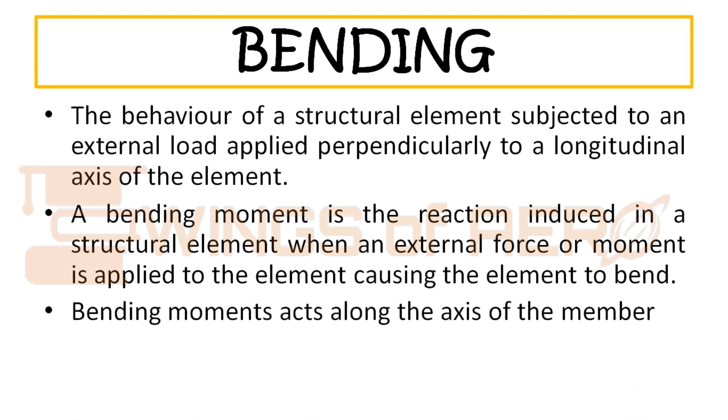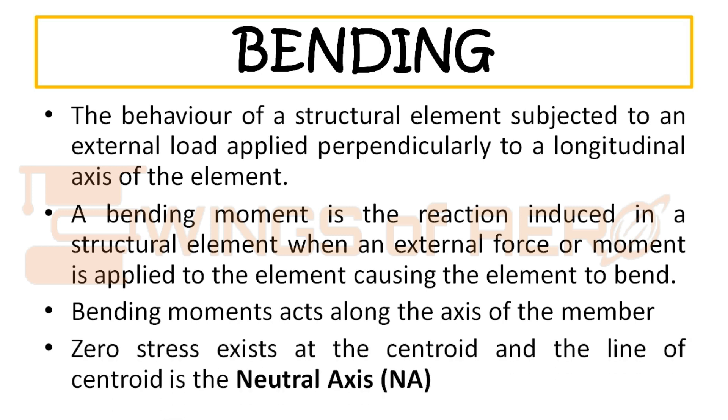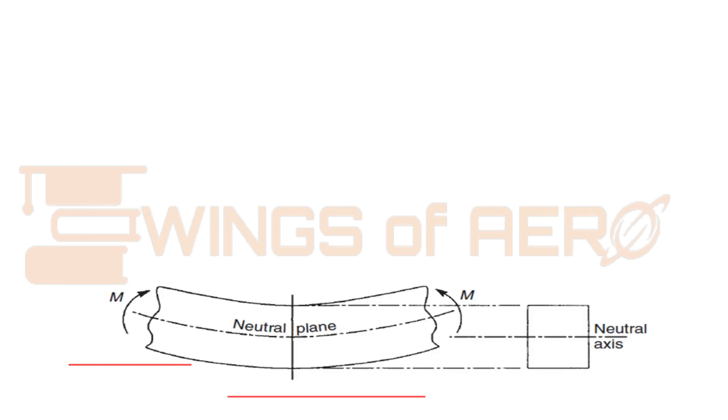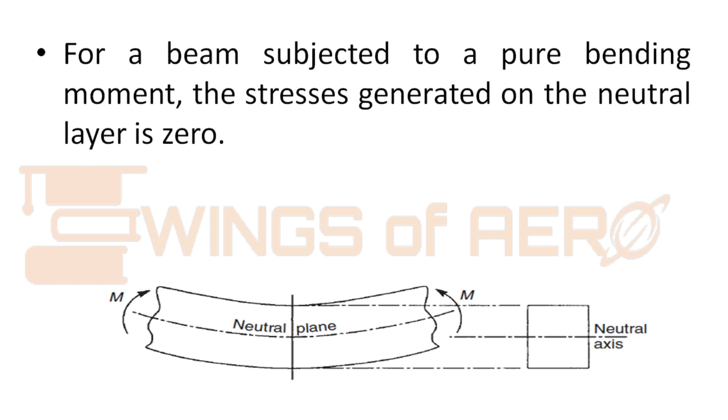The bending moment acts along the axis of the members. The zero stress exists at the centroid and the line of centroid is called the neutral axis. As you can see in the figure displayed on your screen, for a beam subjected to pure bending moment,